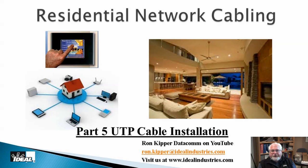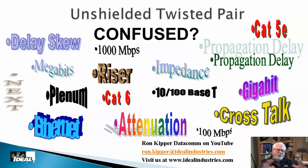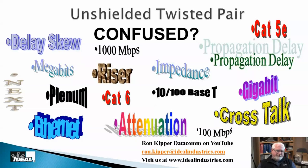Hi folks, it's Ron and welcome back to the channel and another part of my residential network cabling series of videos. This is actually part five, covering UTP cable installation and a little bit about category wire — what to think about when purchasing and installing it. A lot of people get confused by terms like propagation delay, delay skew, near-end crosstalk, and similar things. We'll talk about testing of category cables towards the end of the series, but for now I want to cover the cabling itself.